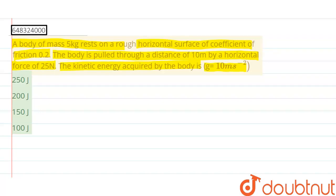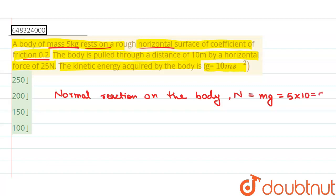So let's see. Since the coefficient of friction is 0.2 and the body is resting on a rough horizontal surface and mass of the body is 5 kg, the normal reaction on the body N equals mg, which equals 5 into 10, 50 newtons.